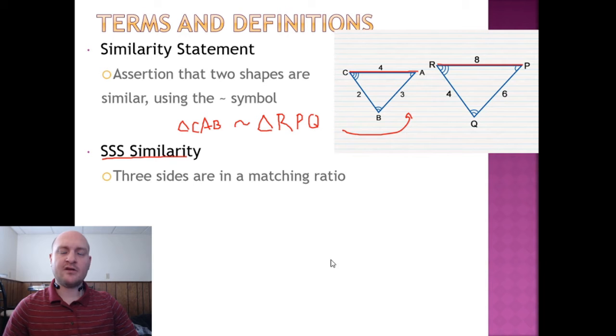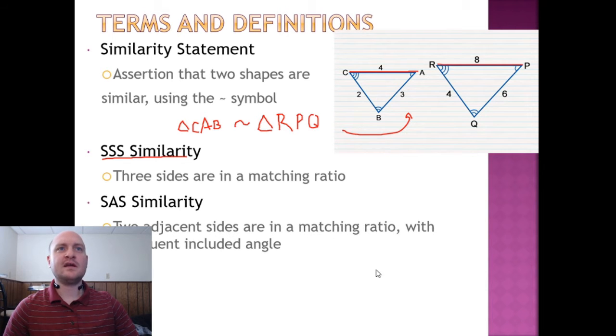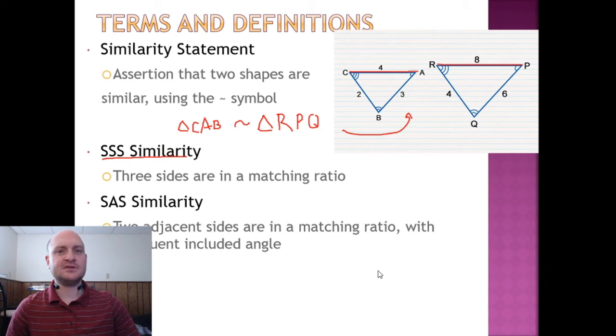The next one that also translates to similarity is SAS. So as long as you have two congruent sides in a matching ratio, and the angle between them is congruent, those two triangles are similar.